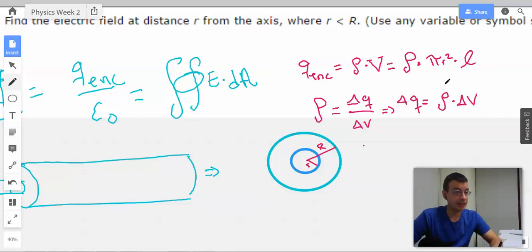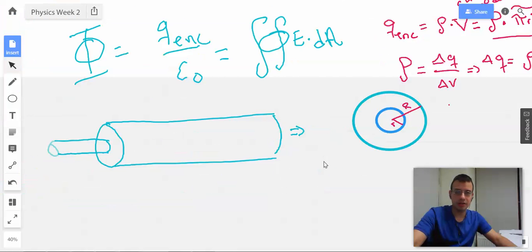So I'm mostly just going to hope that L somewhere cancels out. So that right here is q enclosed. This part's volume, this part is charge density. All right, so now we need to do the other parts.